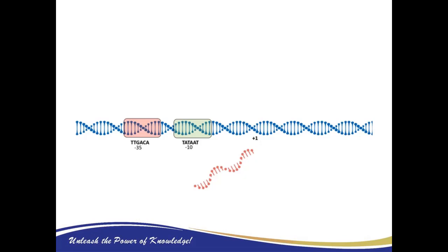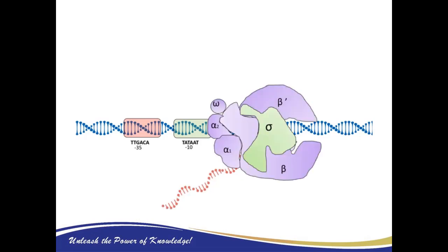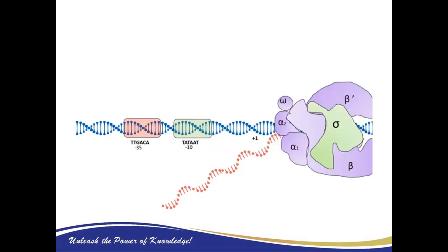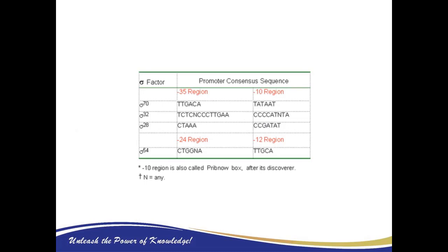The most common sigma factor in bacteria is known as sigma 70. With the sigma factor attached, the RNA polymerase can properly recognize which site is the promoter and form the RNA. Sigma 70 binds to the minus 35 region TTGACA and minus 10 TATAAT region. Other sigma factors in E. coli include sigma 32 and sigma 28 for heat shock genes.